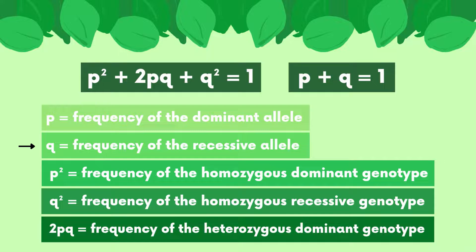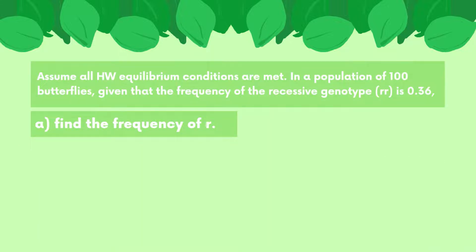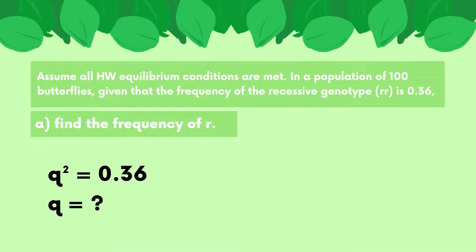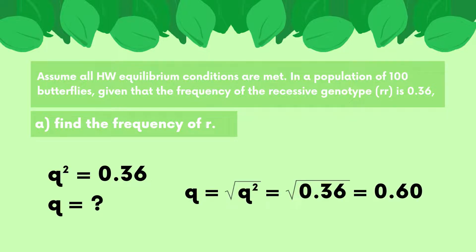The problem tells us that the frequency of the homozygous recessive genotype is 0.36. Going back to the chart, we know that refers to q², which is the homozygous recessive genotype. So q² = 0.36, and we're looking for q. To find the frequency of the recessive allele, all we have to do is take the square root of q², and we find q = 0.6.